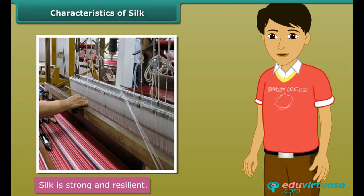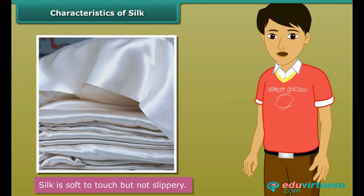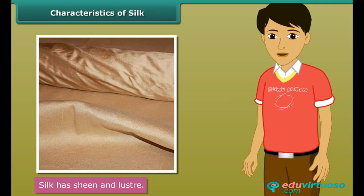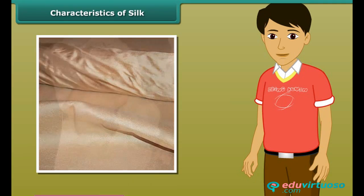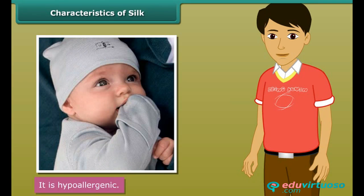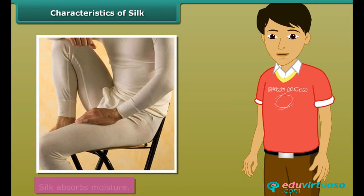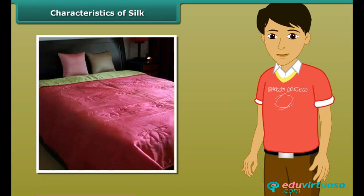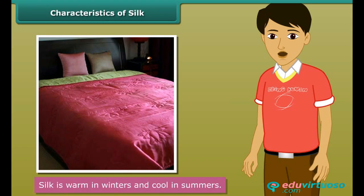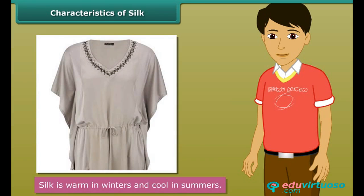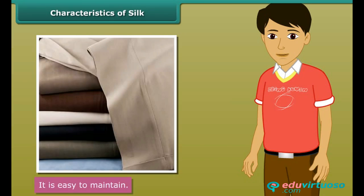Silk is a strong and resilient fiber. It is soft to touch but at the same time not slippery. It has sheen and luster. It is hypoallergenic — that is, it causes less allergies in human beings. It absorbs moisture, is warm in winters and cool in summers, and is easy to maintain.